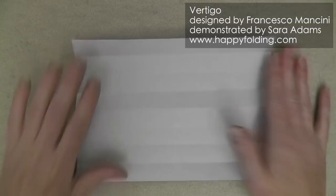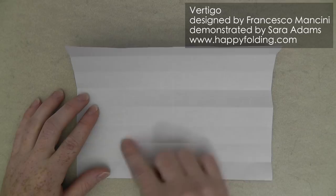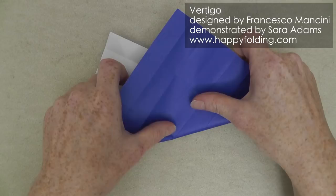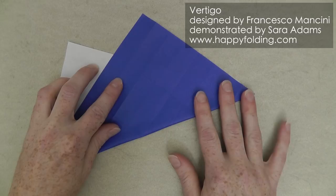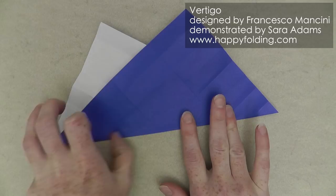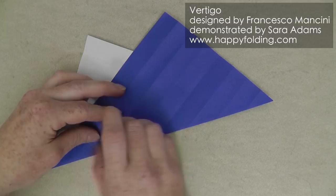Unfold everything. And now make a diagonal crease between these two points, and you can use the intersections to ensure that you get a nice, precise crease. I like to pinch the center, and then get that corner nice and accurate, and then move over to the other corner, and then crease throughout. Make a strong crease. This one is a very important crease.